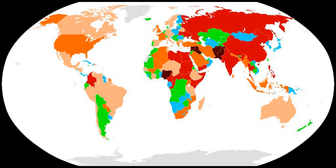The third edition of the Global Terrorism Index was published in November 2015. The study covered analysis of 162 countries. Data from 2014 showed there has been a nine-fold increase in the number of deaths from terrorism since 2000. Terrorist activity increased by 80% in 2014 to its highest recorded level. The largest ever year-on-year increase in deaths from terrorism was recorded in 2014, rising from 18,111 in 2013 to 32,685 in 2014. The rise in terrorism can largely be attributed to two groups, ISIS and Boko Haram, which were responsible for 51% of all terrorism-related deaths in 2014.